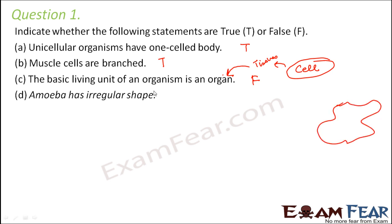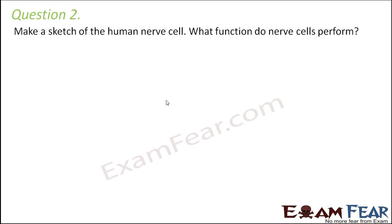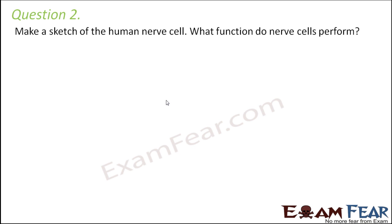'Amoeba has irregular shape' — yes, that is true because this is how an amoeba looks, and its shape keeps on changing. When it wants to move from one place to another, or when it wants to take in food, its shape keeps on changing. Amoeba is made up of one cell and that cell keeps on changing its shape — it doesn't have a fixed shape.